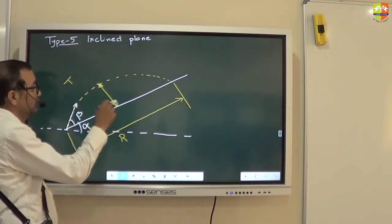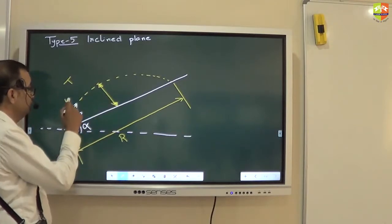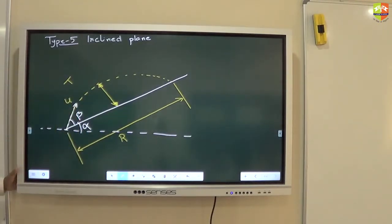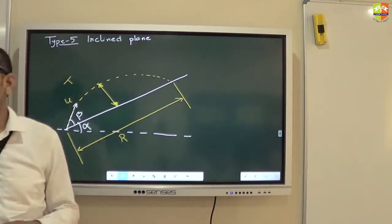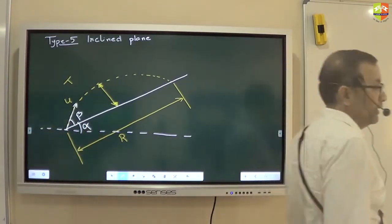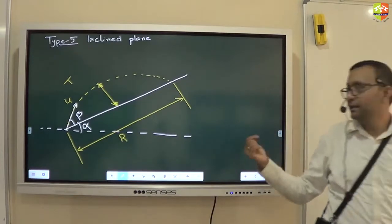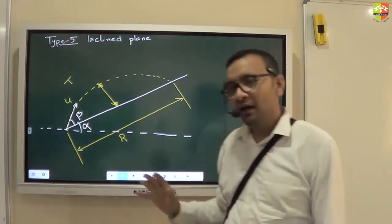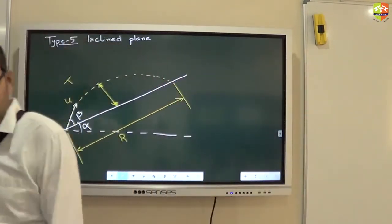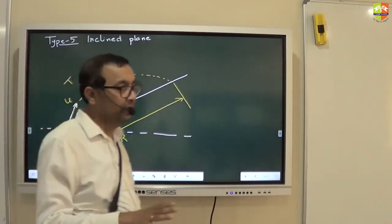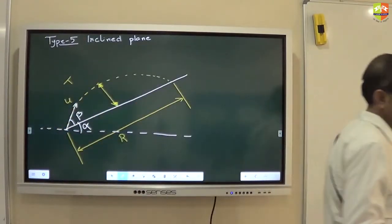What is initial velocity? Initial velocity is u. Try to find out all of this. Once this type of projectile is over, then theory of the entire chapter is done. After this we will be doing problem practice throughout the class.